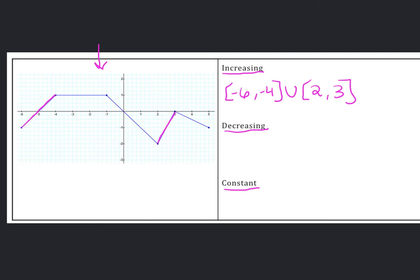So now let's look at when is it decreasing. Left to right, it's decreasing here and here. So decreasing on the interval negative 1 to 2, and decreasing on the interval 3 to 5.